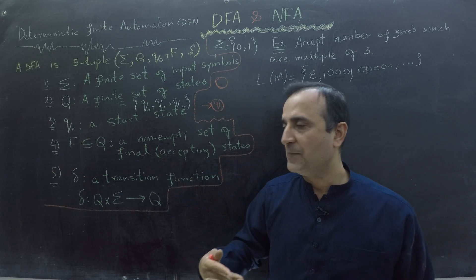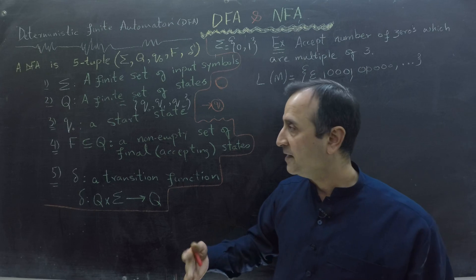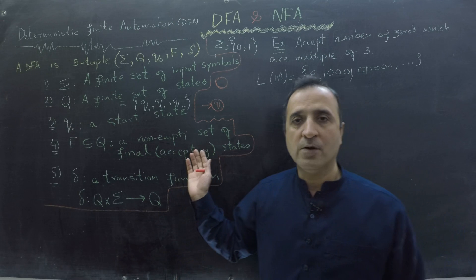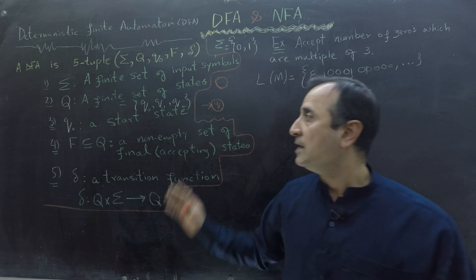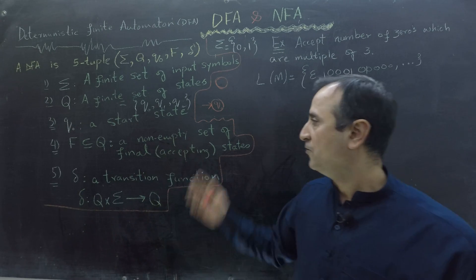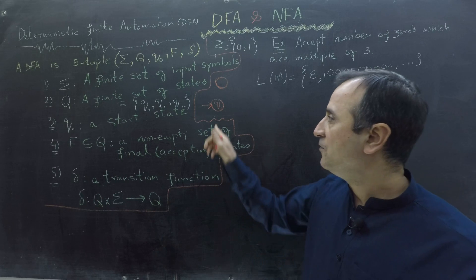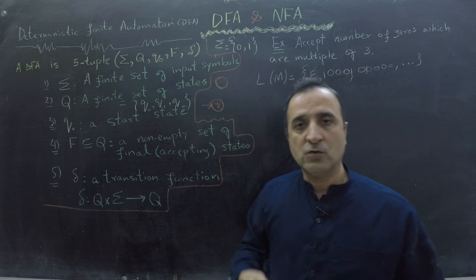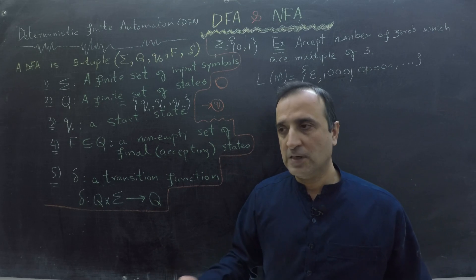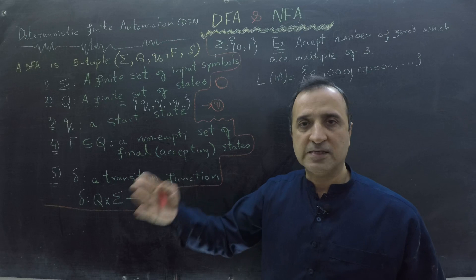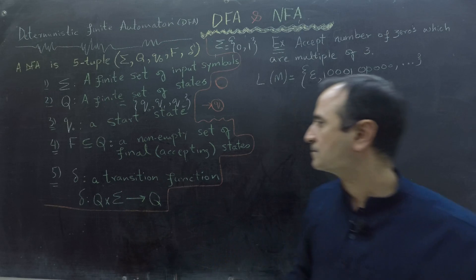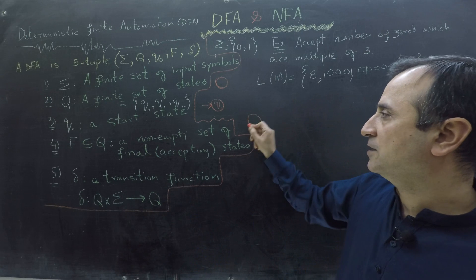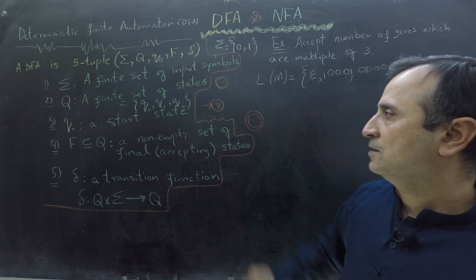The set of final states must be non-empty, meaning at least one state must be a final state. We could have more than one final state. In our case, for this example, Q0 is also a final state — so it is not unusual that the start state and final state are the same. The final state is represented by two circles.